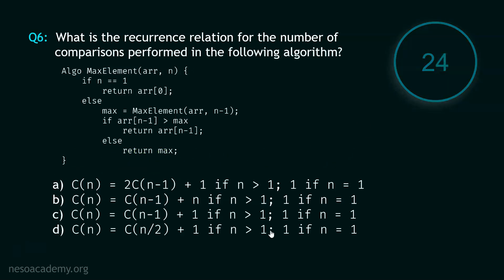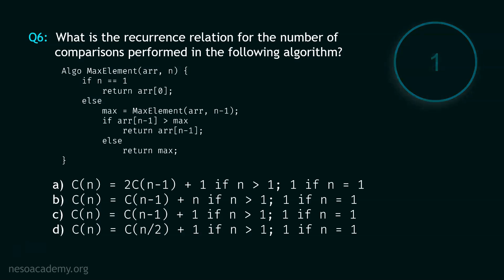Now let's move to question number 6, and your time starts now. Stop. The correct option is option C. In the base case, we are performing one comparison — we are comparing n with 1 — and here also we are performing one comparison. We represent the number of comparisons by C(n) for this algorithm. For max element ARR[n-1], it will be C(n-1). So clearly option C is the correct option.